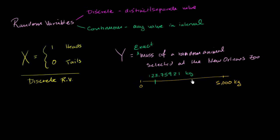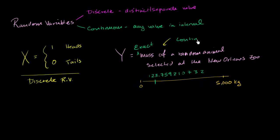And even that might not be the exact mass — you might have to get even more precise. Even though this is defined over a finite interval, you can take on any value in between. There are no discrete values. So this one is clearly a continuous random variable.